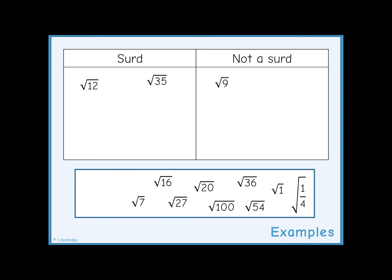The square root of 16, on the other hand, is 4, because 4 times 4 gives you 16. This is an integer, so root 16 is not a surd.